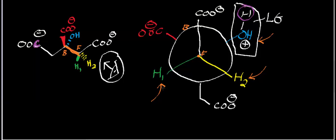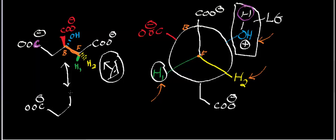Remember: the leaving group has to be anti-periplanar to the proton that's abstracted. So H2 here is not anti-periplanar. In the staggered conformation, the anti-periplanar proton is the green one — let me circle this one. This is going to be the proton that's abstracted. Our goal for this part of the reaction is to get cis-aconitate.